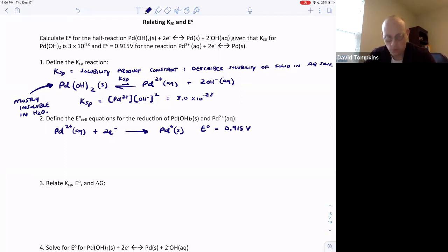Now, what we're looking to find here is the cell potential for palladium hydroxide, allowing palladium to then accept electrons and become Pd⁰. And two hydroxides do not undergo redox, they simply become aqueous ions. This potential is unknown.